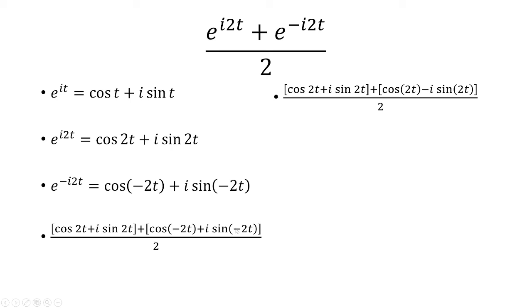Cosine is an even function, so the negative just disappears. And so we're just left with cos(2t). Now we're going to add: cos(2t) + cos(2t) is 2·cos(2t).